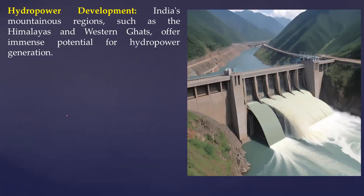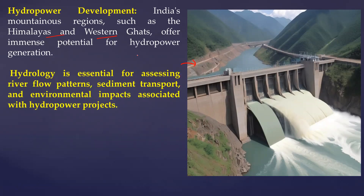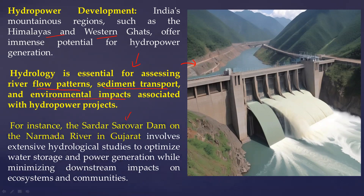Another important scope is hydropower development. India needs to reduce greenhouse gas emissions and look to alternative energy sources. The Himalayan region, Western Ghats, and other areas have huge water potential where hydrology plays a key role. Hydrologists work with environmental engineers to study flow patterns, sediment transport, and environmental impacts. For instance, the Sardar Sarovar Dam on the Narmada River is a well-known example where ecosystem aspects and hydrological study have been carried out.